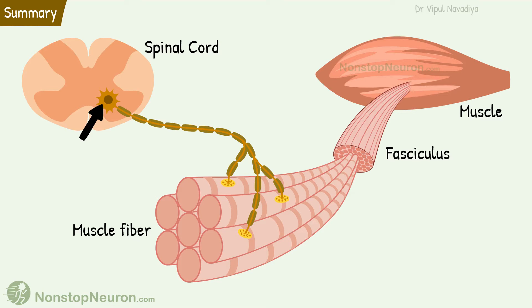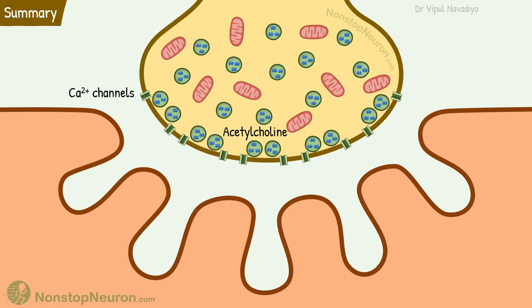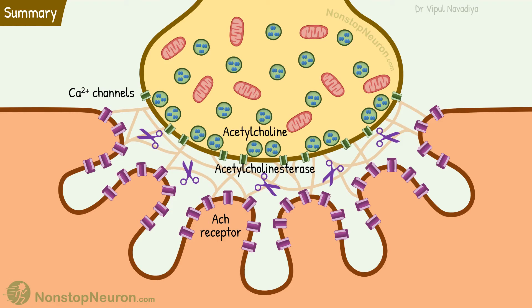Motor neurons originating from the ventral horn of the spinal cord branch into many processes. Each axon process innervates a separate muscle fiber midway along the length. The presynaptic nerve terminal has vesicles that store acetylcholine, voltage-gated calcium channels, and numerous mitochondria. The postsynaptic membrane has acetylcholine receptors which are ligand-gated sodium channels. And the synaptic cleft contains acetylcholinesterase.